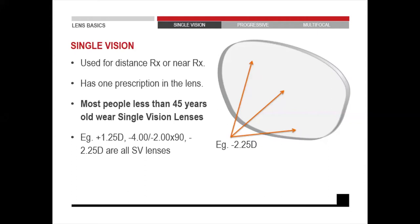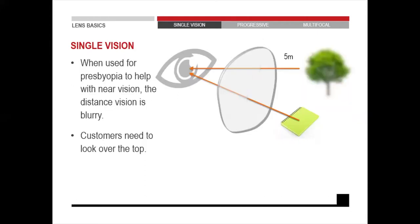For younger people wearing single vision lenses, they will be able to see close by as well as far, because their accommodation system is still very active. For someone with presbyopia, if this is a near single vision lens, the distance vision will be blurry. Without presbyopia, the optometrist makes the single vision glasses for distance, and the patient uses the accommodative system to focus on near objects. That's why people with presbyopia wearing single vision reading glasses will look over their glasses to see far.